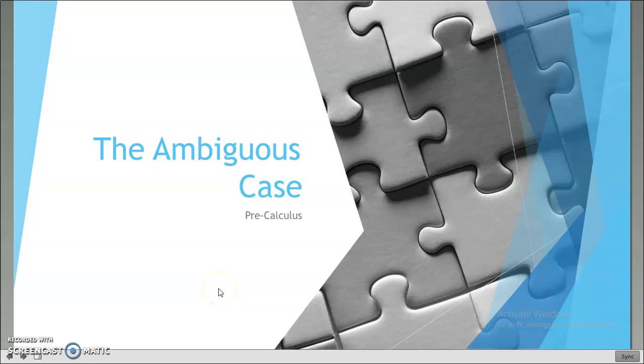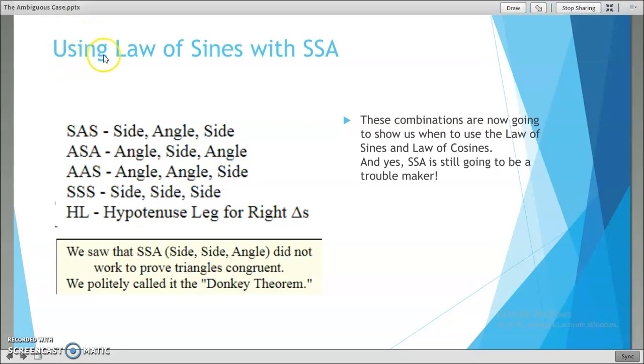Now let's look at the ambiguous case. It says using the law of sines with SSA. I recall from geometry you learned, and I think we actually discussed this in coordinate algebra as well, the way to find out if two triangles are congruent to each other.